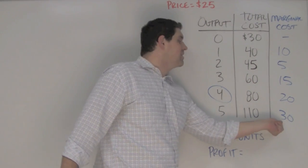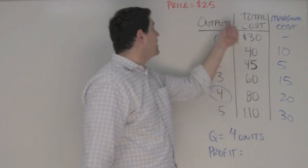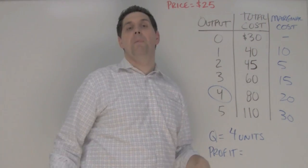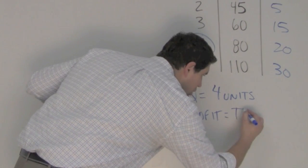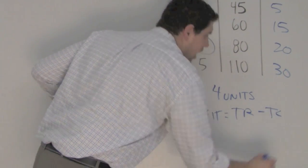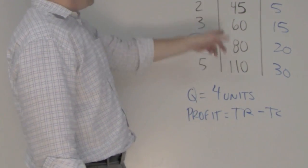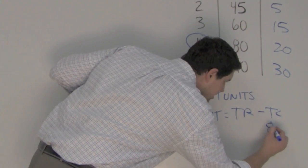I would never produce a unit where the additional cost is greater than the additional revenue I get from selling that unit. Now what about the profit? Profit equals the total revenue minus the total cost. The total cost is given, it's right here, it's $80.